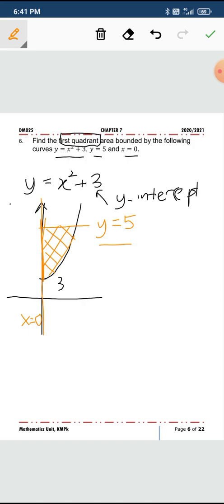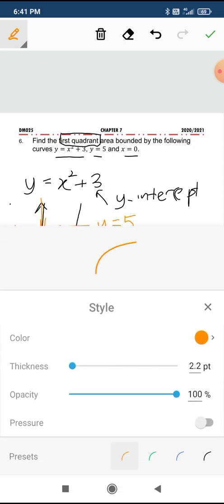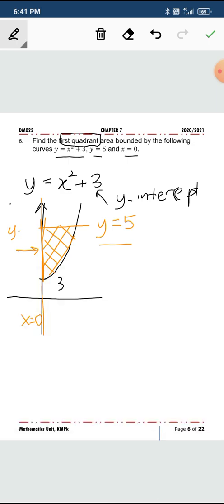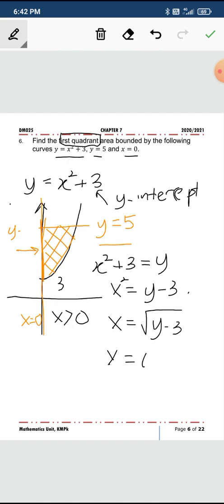Before we find the area, because we are going to look at it from the y-axis, it's better for us to change the function. Now it's y in terms of x, so we need to change x in terms of y. This is x squared plus 3 equals y, and your x squared is y minus 3. This region x is greater than 0, so you take the positive square root. Your x is square root of y minus 3, or you can write this in index form. Technically, this is going to be our function.